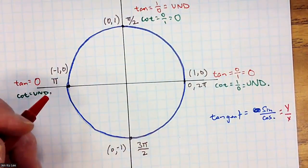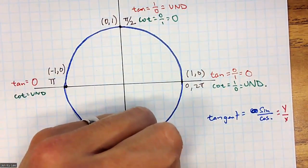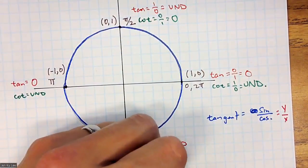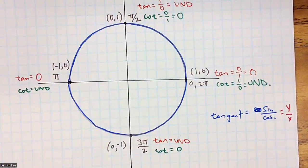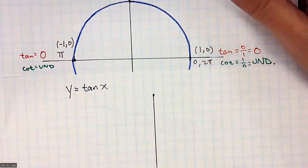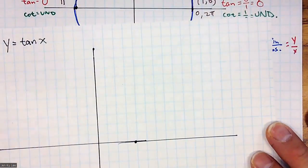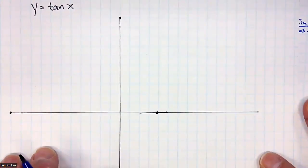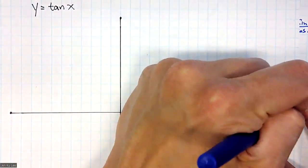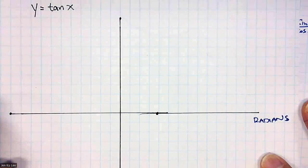At 3π/2, tangent is −1 over 0, which is undefined, and cotangent is 0. Now let's graph y = tan(x). Just like sine and cosine, we make our x-axis our radian measure and our y-axis is the tangent function value.